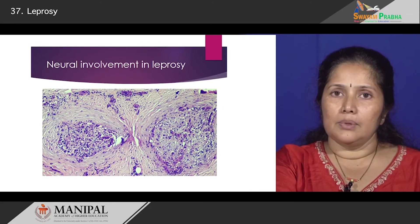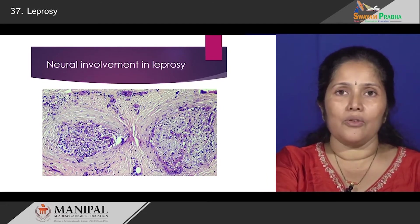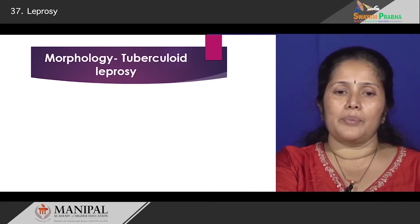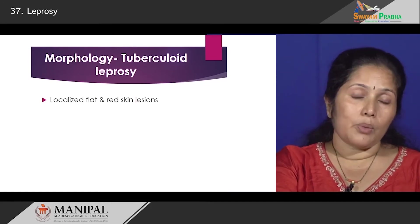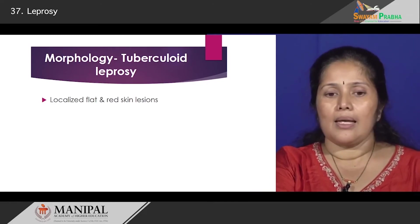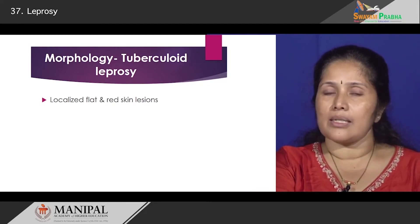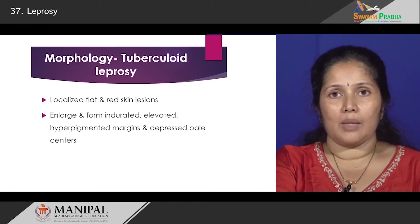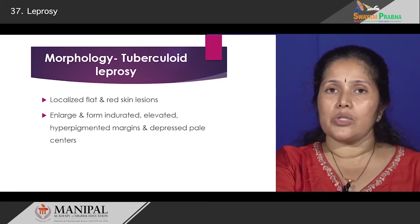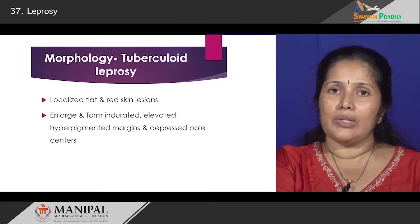Now let us look at the morphology of the tuberculoid end of the disease — tuberculoid leprosy. Tuberculoid leprosy is a more localized kind of disease, so the lesions are much fewer. The lesions are initially slightly red-colored skin lesions, and as they enlarge the lesion becomes more indurated, with a hyperpigmented margin. In the center the lesion tends to clear out — that is the area where healing is occurring.